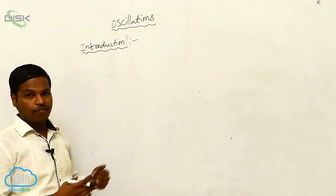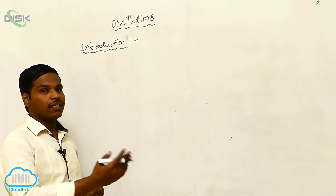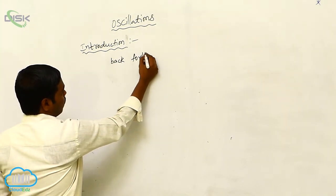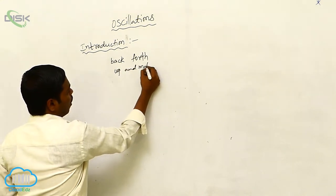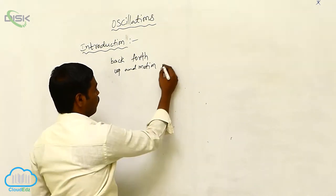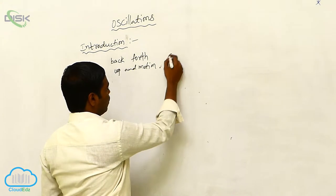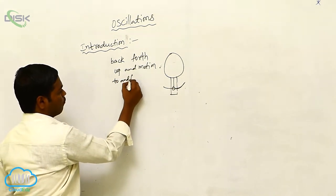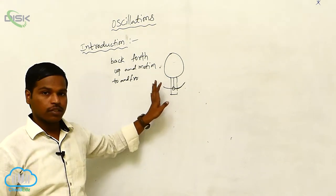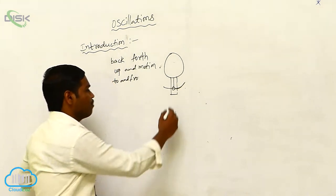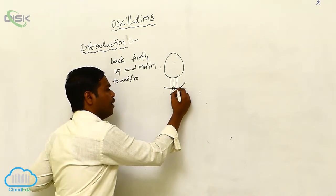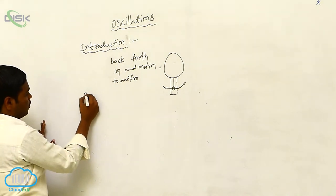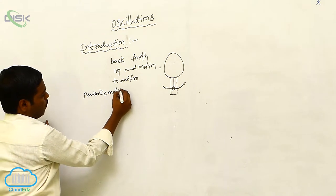Or if we observe the piston moving in a back and forth motion, or the pendulum of a wall clock moving in a to and fro motion — in all these types of motions, the motion of an object is repeating again and again. This type of motion is called periodic motion.